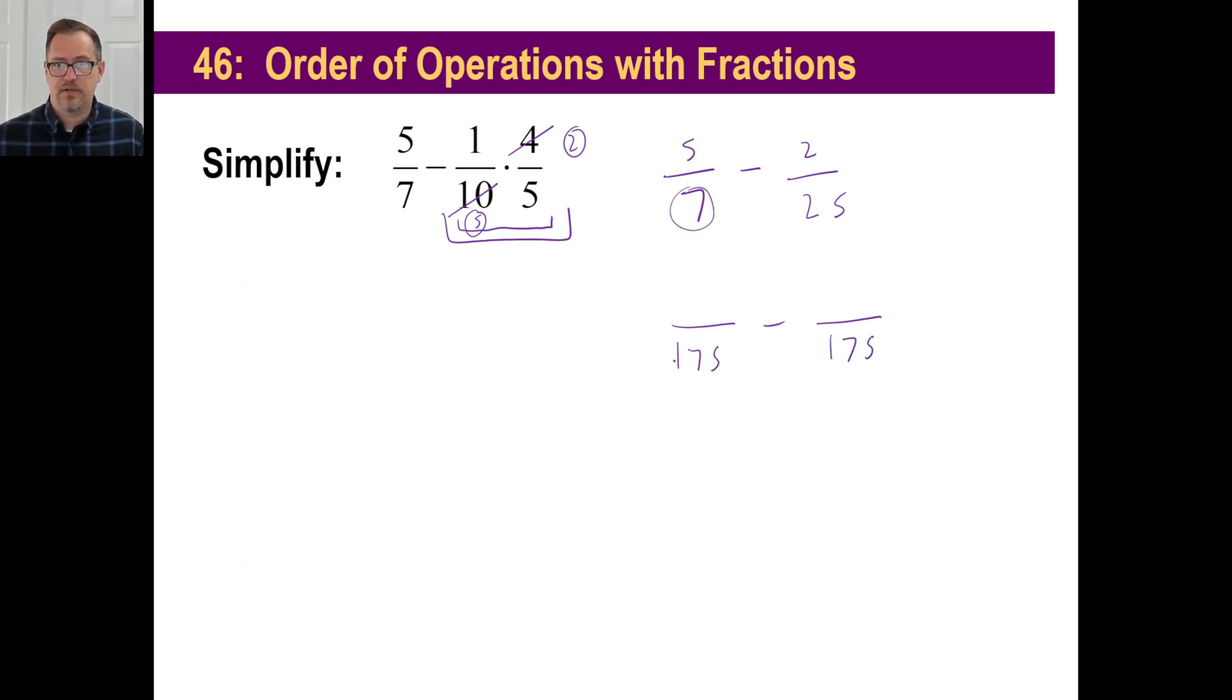So I multiply this by 25. Five times 25 is 125. Multiply this by seven. So two times seven is 14. And then 125 minus 14 is 111 over 175. What a nasty fraction.